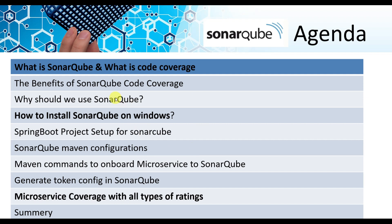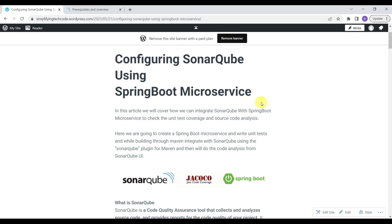In the agenda we are going to check: benefits of SonarQube and code coverage, why we should use SonarQube and how to use it to improve code quality parameters, how to install SonarQube on Windows, how to do Maven configuration with SonarQube in Eclipse IDE, what commands to use to onboard our microservice to SonarQube server, how to generate a token to connect with SonarQube, what is a code smell, and how to check security ratings and maintainability ratings in SonarQube.